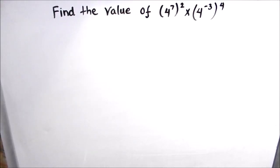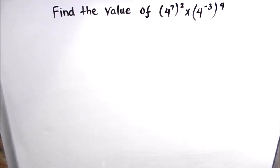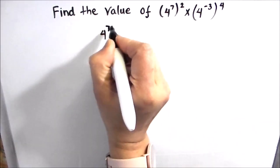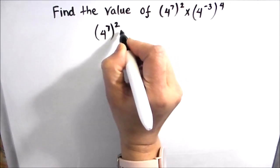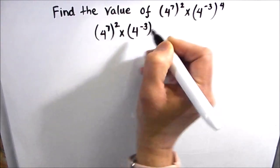Hello students, in this video we are going to find the value of this expression. We are going to use the exponential laws of multiplication. Let's start by rewriting the question: (4^7)^2 × (4^-3)^4.